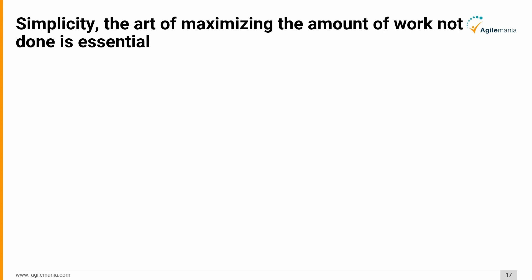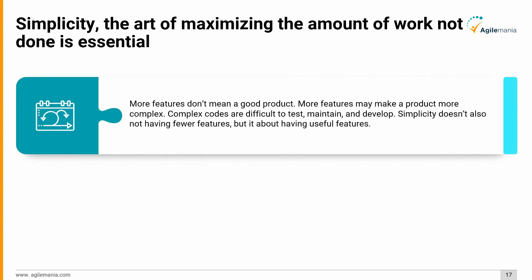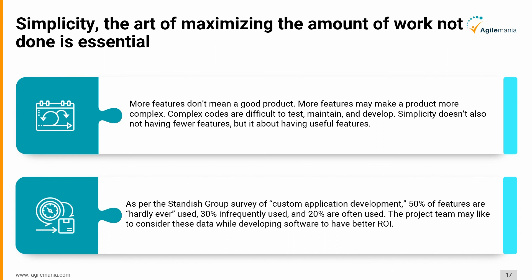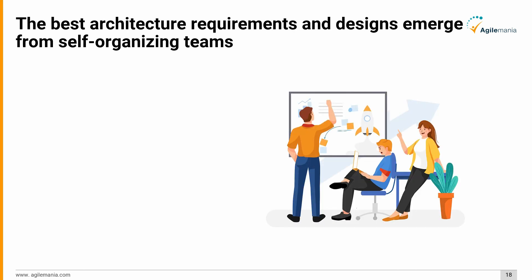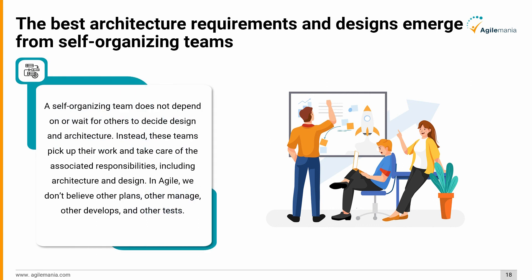The tenth principle in detail: simplicity — the art of maximizing the amount of work not done — is essential. More features don't mean a better product; more features may make a product more complex. Complex code is difficult to test, maintain, and develop. Simplicity is not about having fewer features, but about having useful features. According to the Standish Group survey, 50% of features are hardly ever used, 30% are used infrequently, and only 20% are often used.